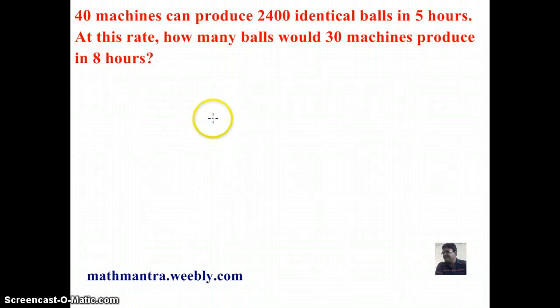In this video, we are going to solve a simple problem based on proportion. Let's look at our question. 40 machines can produce 2400 identical balls in 5 hours. We are supposed to find out how many balls would 30 machines produce in 8 hours.